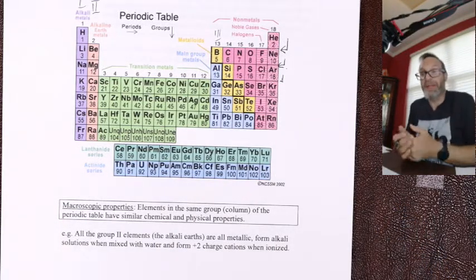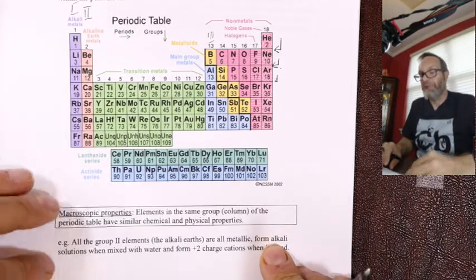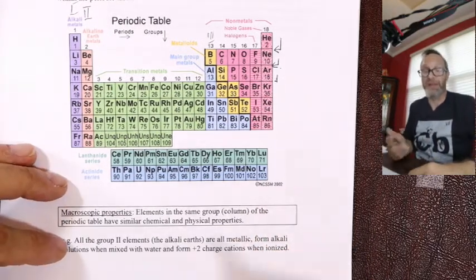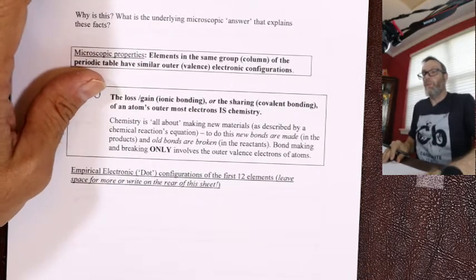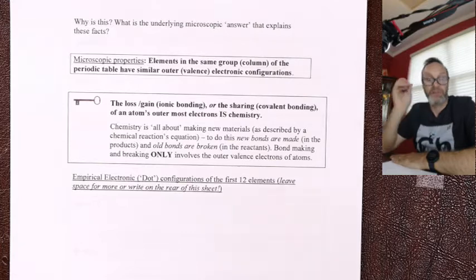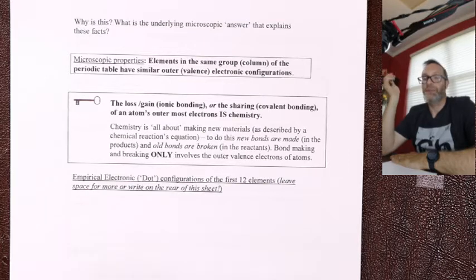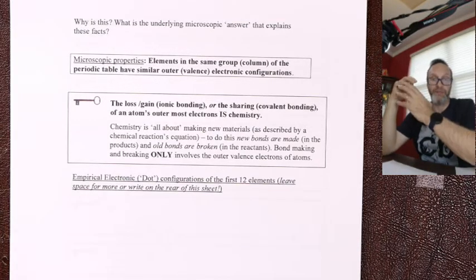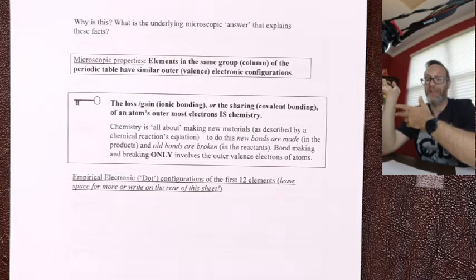We now know that group one makes a plus one ion, group two makes a plus two ion — that's similar chemistry. The ions make plus one and plus two because of the underlying electronic structure. So why are things in the same column having the same chemistry? On a microscopic level, when atoms bump into each other they stick to make bonds because they have electrons on the outside — called valence electrons. Those outermost electrons are the ones that interact with other atoms.